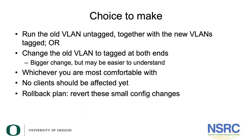Now you have a choice: run the old VLAN untagged together with the new VLANs tagged, or change the old VLAN to tagged on both ends — a bigger change but easier to understand. The problem with running it untagged is it's likely inside VLAN 1, so you usually want to make sure the old VLAN is a specific one that you know — like VLAN 999 or 666 — something you're comfortable with so you can understand the configuration. At this point you're just configuring the link between the distribution and core switch, so clients should not be affected yet. The rollback plan is to revert these small config changes.